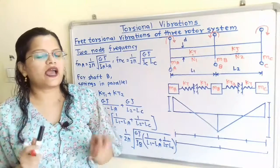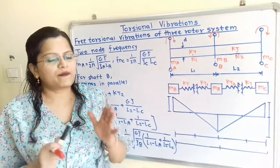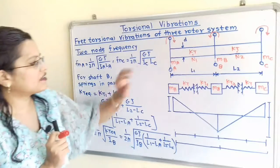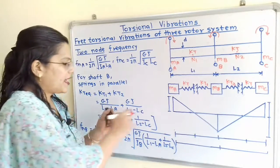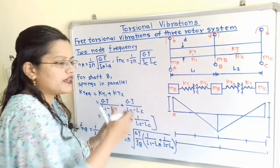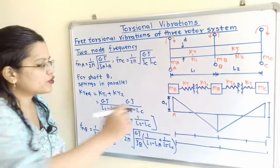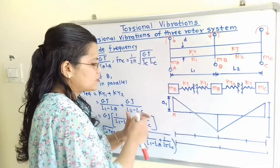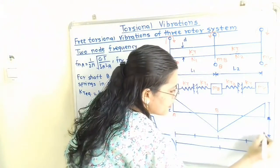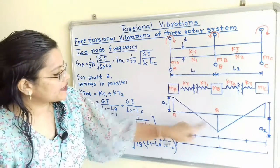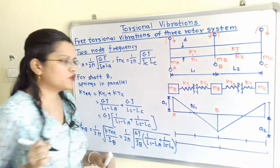Now we will understand the amplitude of vibration. When these rotors rotate in opposite directions, their amplitudes of vibration are also in opposite directions. We draw a horizontal line and for rotor A, the amplitude of vibration is in the upward direction, shown as A1. Rotor B rotates in the opposite direction, so the amplitude of vibration for B is in the downward direction, shown as A2. Joining the endpoints of A1 and A2, the point of intersection with the horizontal line gives the node point N1.